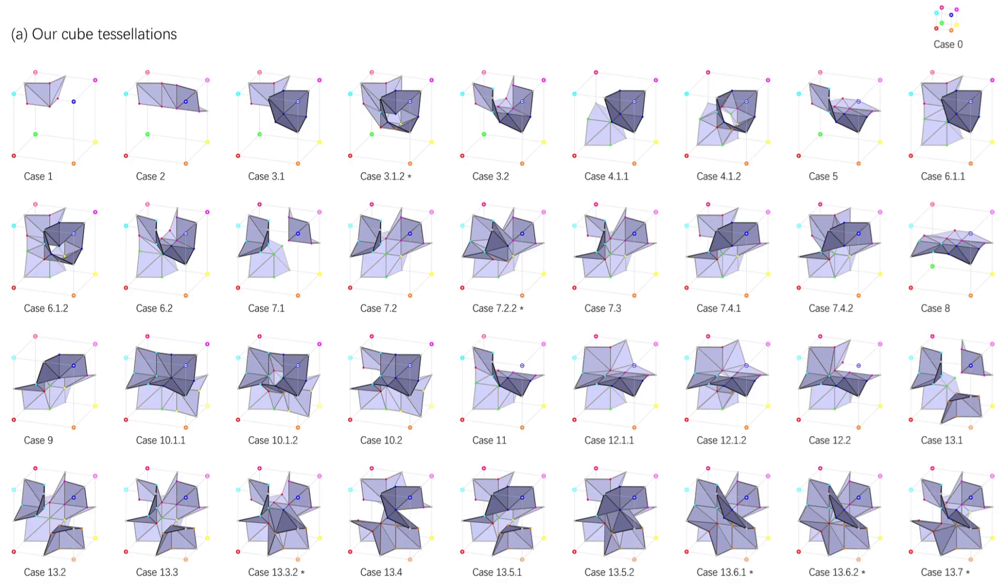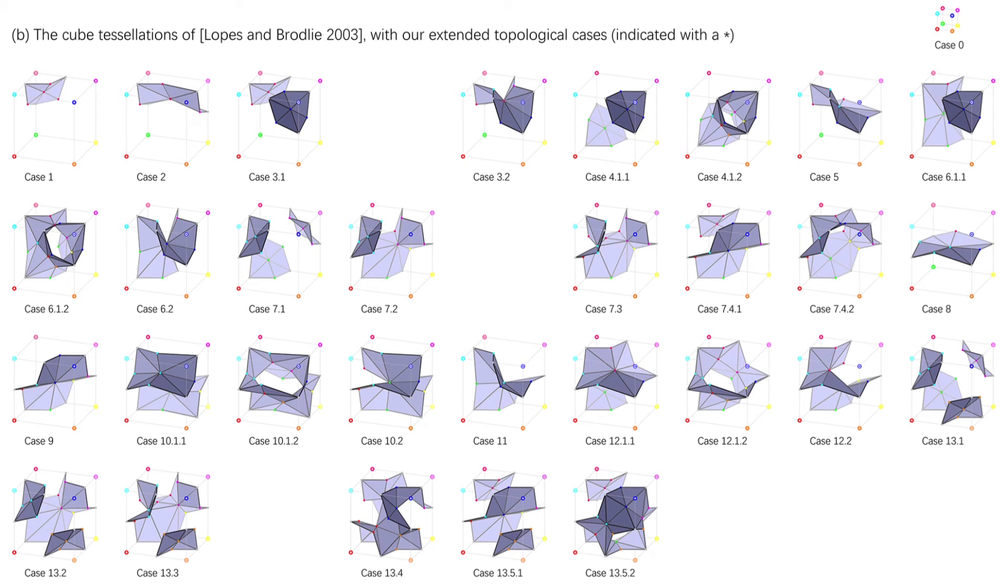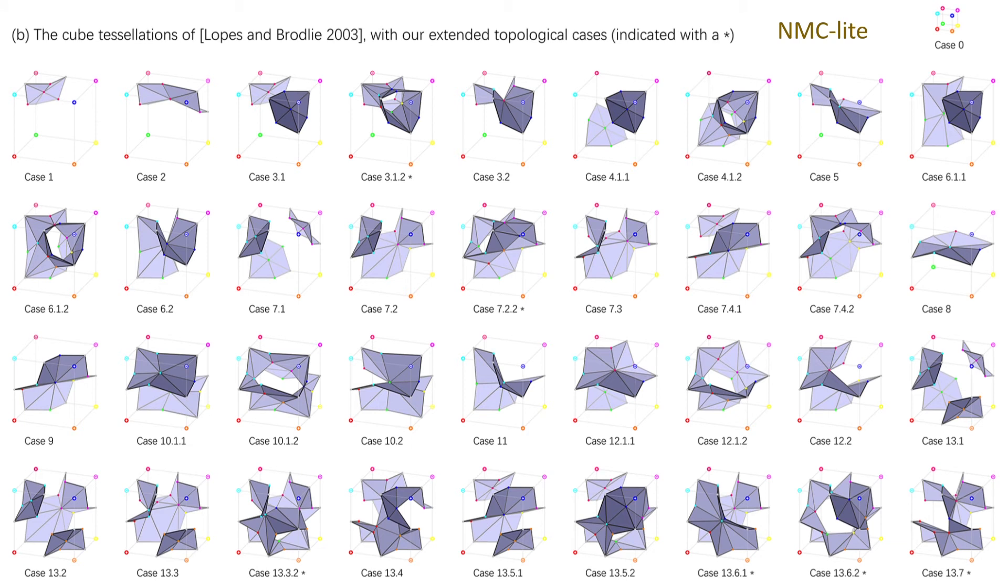Here are our designed tessellation templates. To compare, these are the templates used in Marching Cubes 33. And in the paper by Lopes and Brodlie. Note that this method and Marching Cubes 33 both have 31 unique cases with respect to rotation, mirroring, and inverting the signs. Ours has 37 unique cases, so we have added 6 cases to this set of templates, and then we can use them in our network.